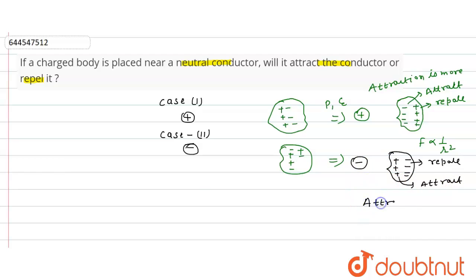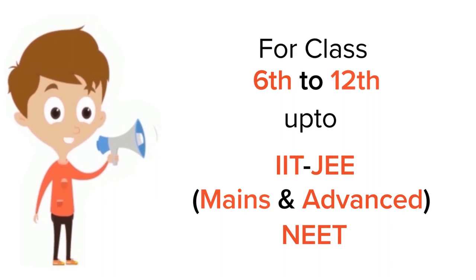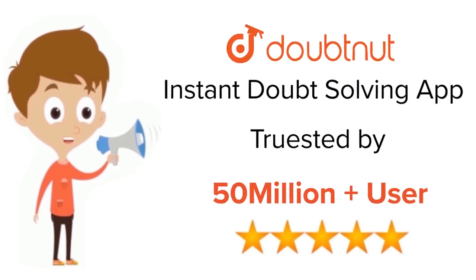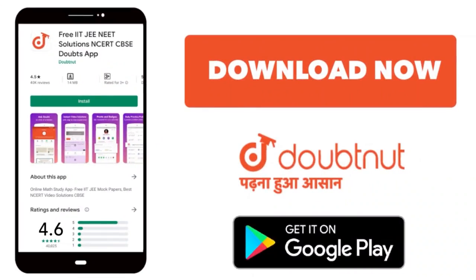Finally, we can say that when a charged body is placed near a neutral conductor, attraction will always occur. This is our answer. Thank you. For class 6 to 12th, IIT JEE, and NEET level — trusted by more than 5 crore students — download DoubtNet today.